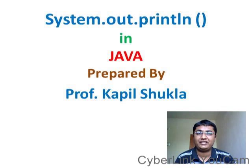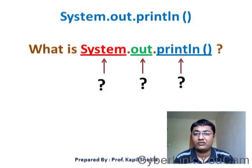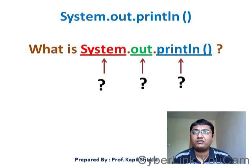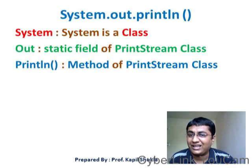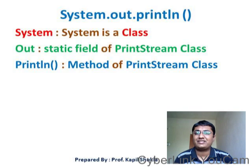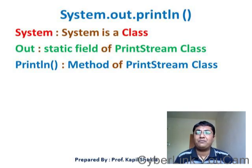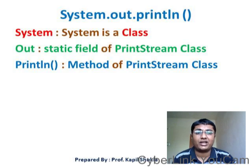In today's tutorial, we will find the answer to these three main questions: what is System, what is out, and what is println. System is a class, out is a static field of the PrintStream class, and println is a method of the PrintStream class.